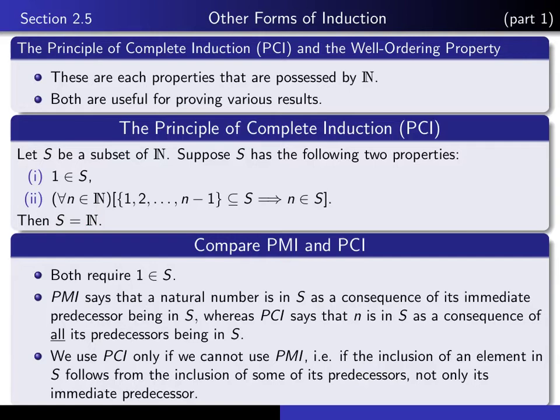In other words, if the inclusion of an element in S follows from the inclusion of a few of its predecessors rather than just its immediate predecessor, then you would use PCI rather than PMI. But if you know that the inclusion of an element in S follows as a consequence of its immediate predecessor, then you would simply use PMI.